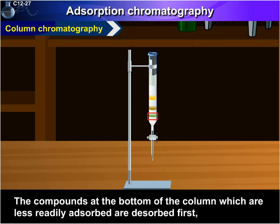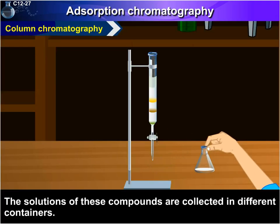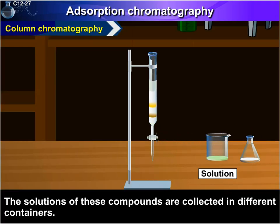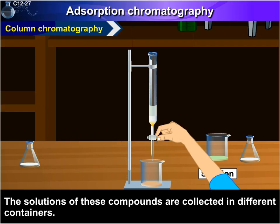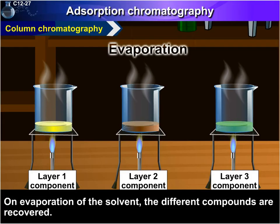The compounds at the bottom of the column, which are less readily adsorbed, are dissolved first. And more readily adsorbed compounds at the top are dissolved later. The solutions of these compounds are collected in different containers. On evaporation of the solvent, the different compounds are recovered.